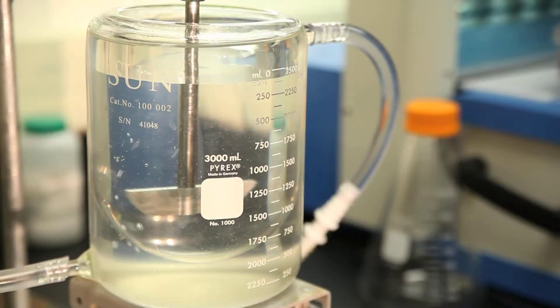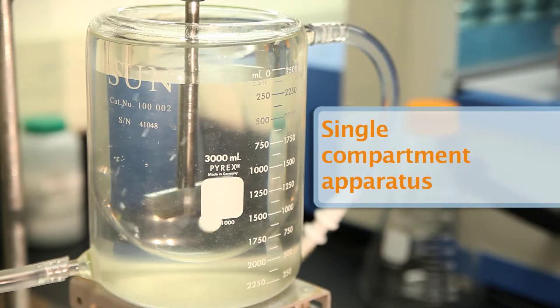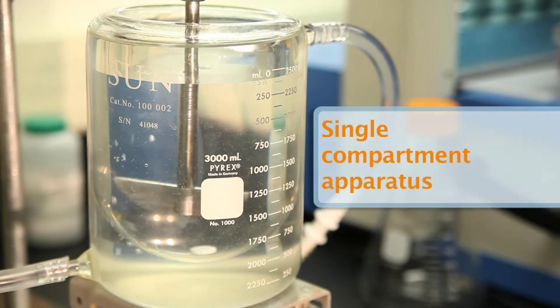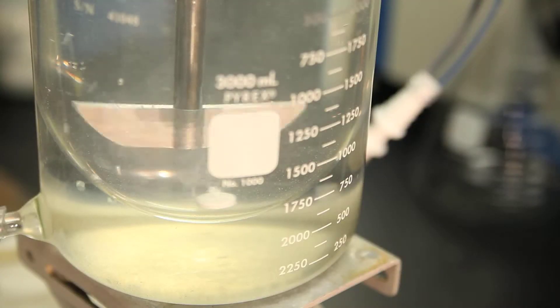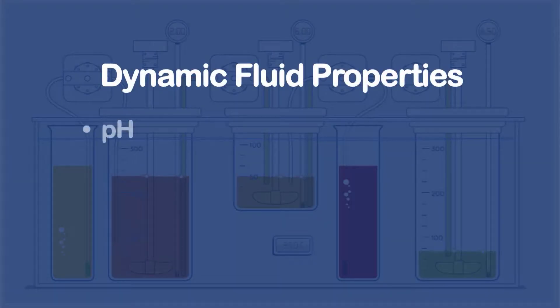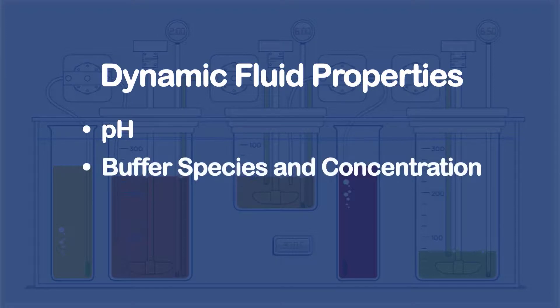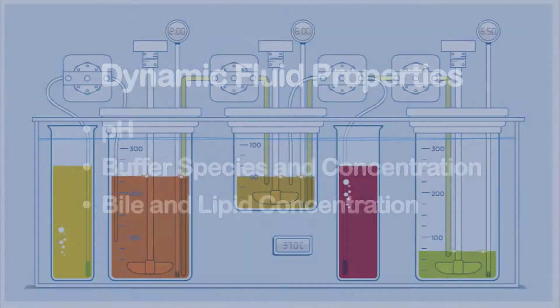The GIS provides a better representation of the physiological environment than conventional single compartment dissolution devices. These typically contain an unrealistically large volume of a single type of fluid. The fluid properties in each chamber within the GIS, such as pH, buffer species and concentration, as well as bile and lipid concentrations, can be designed to mimic the desired gastrointestinal segment.